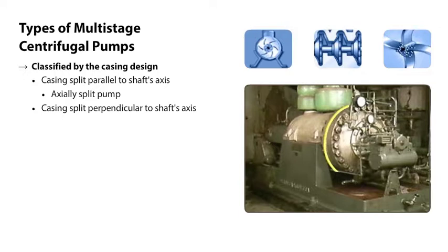Now this pump's casing is split perpendicular to or around the shaft's axis. Since the opening for the casing is essentially a circle that goes around the shaft's axis, this pump is said to be a radially split pump.